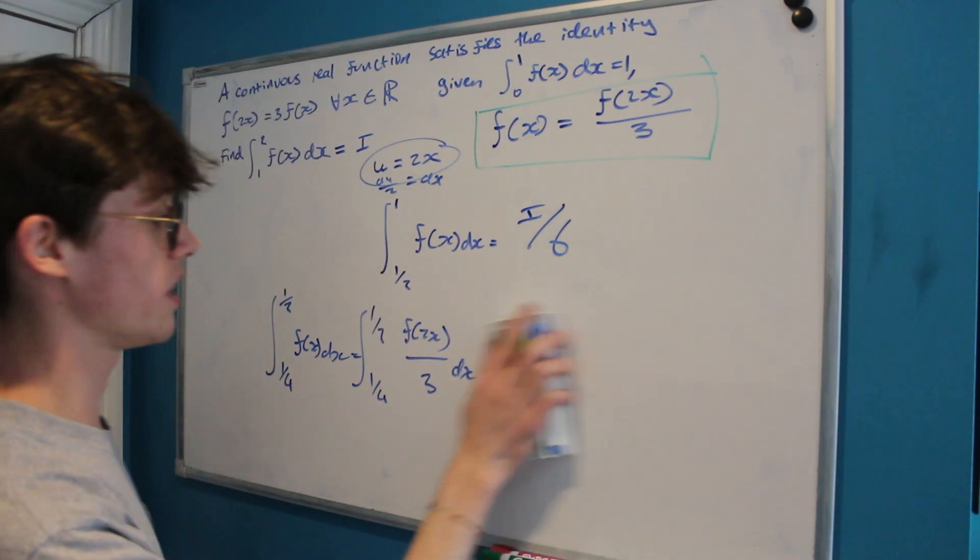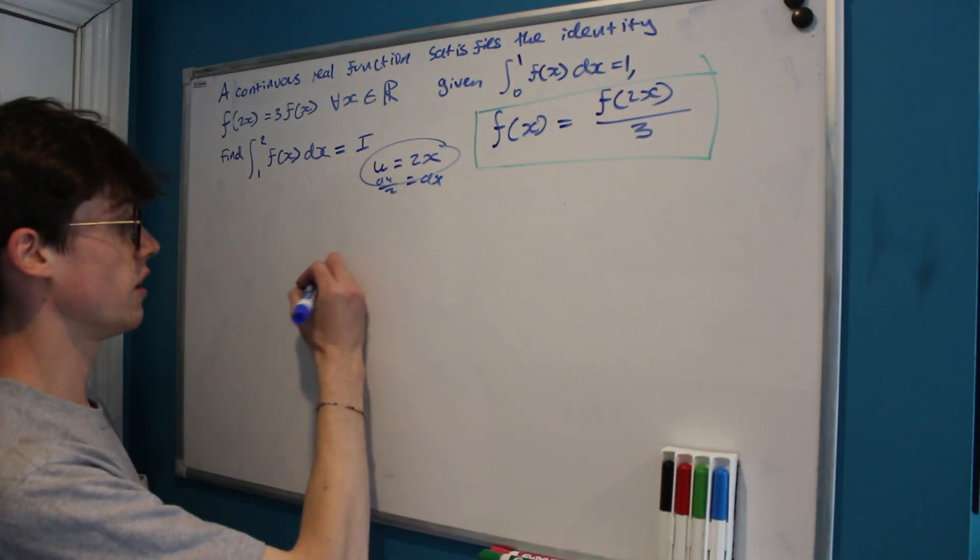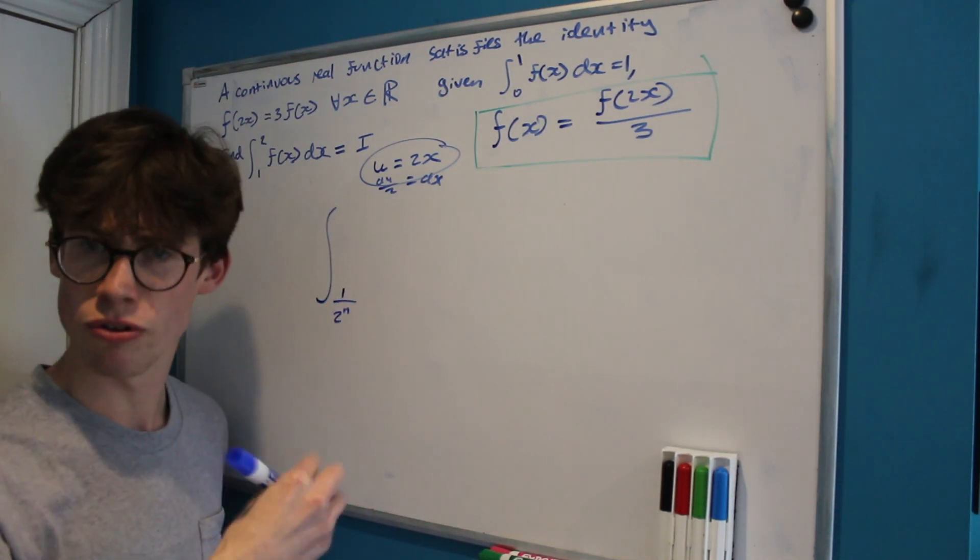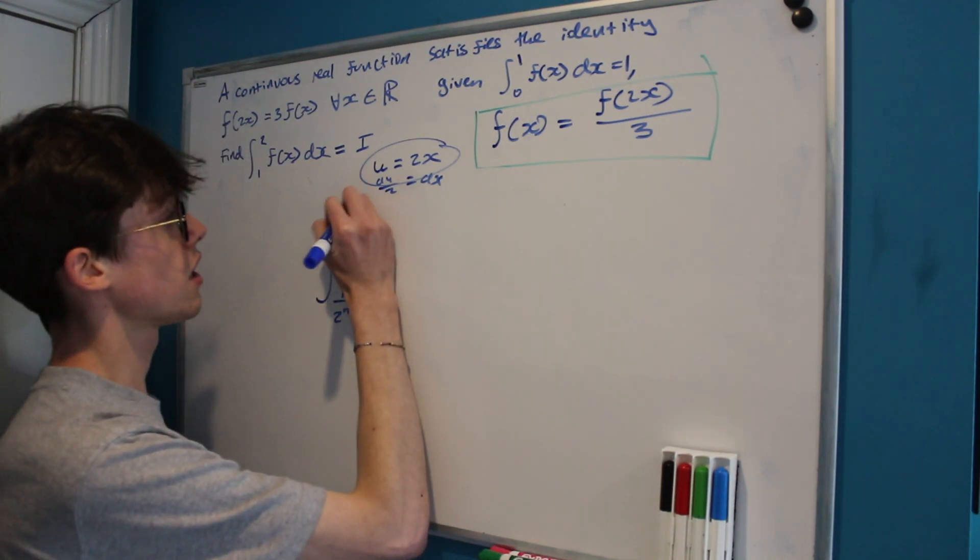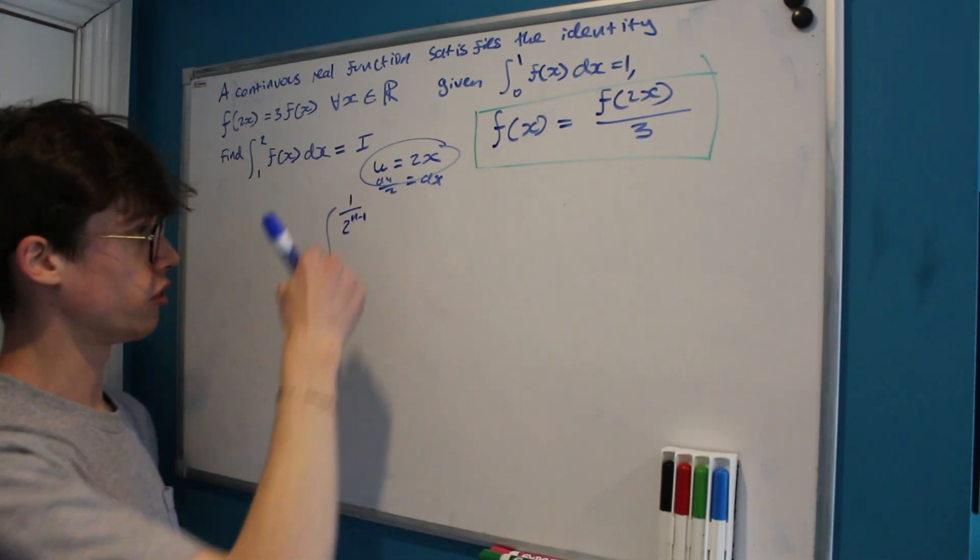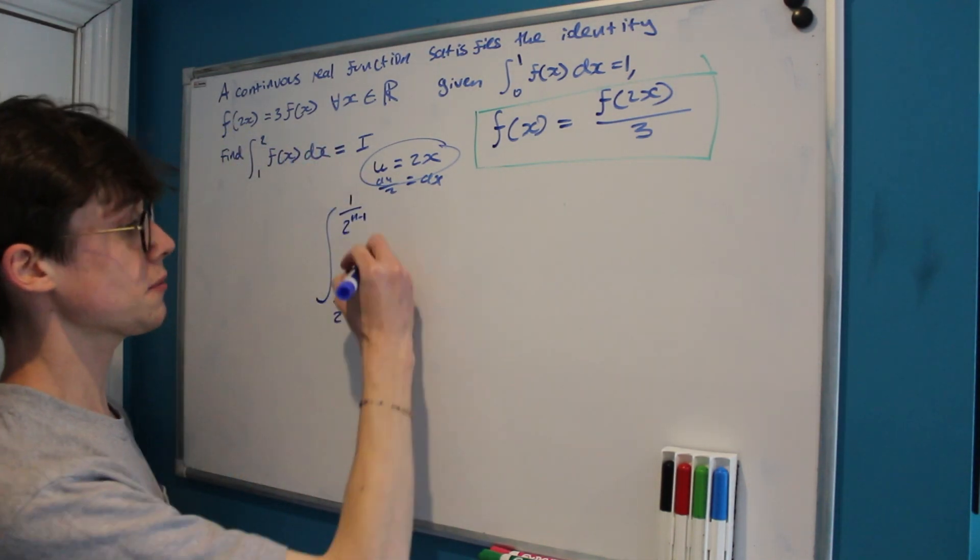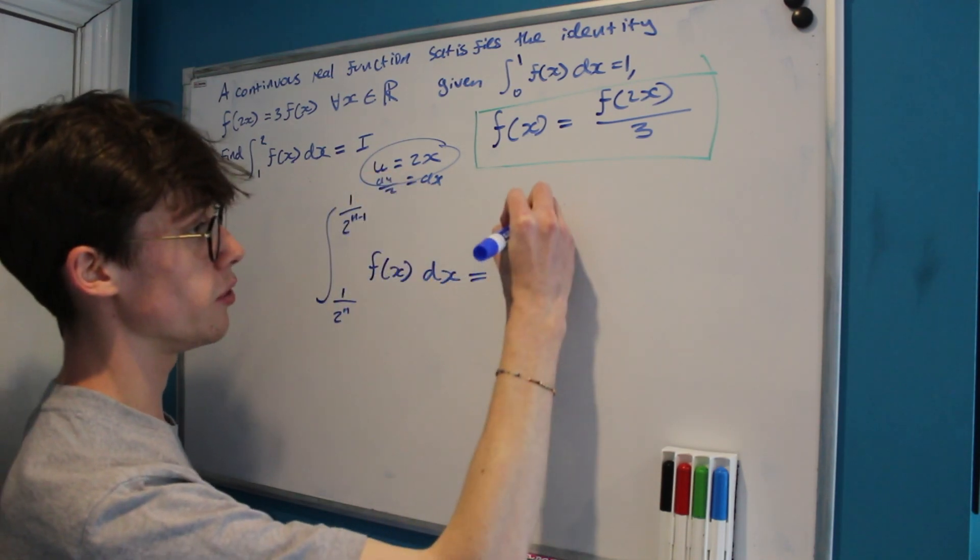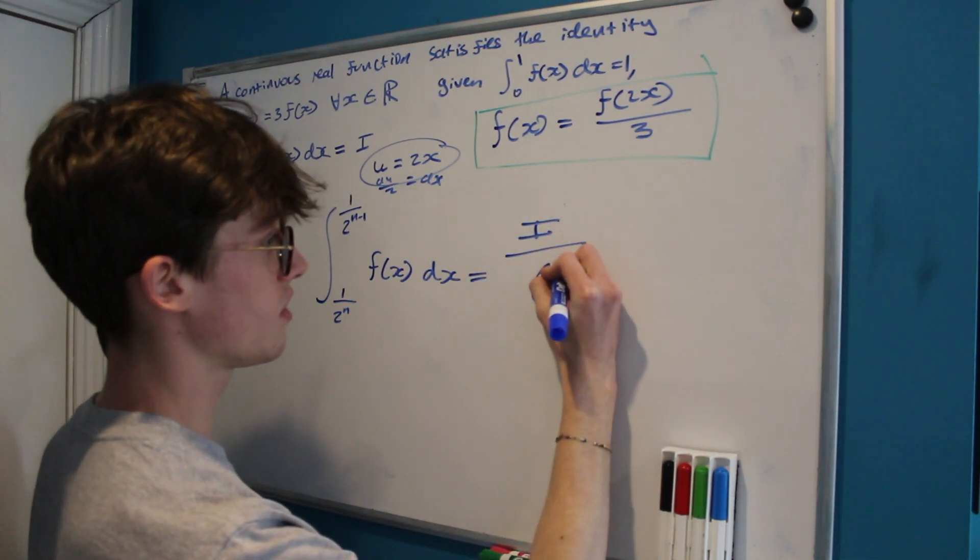So how could we write this in terms of n? That's always what we're seeking to do with these problems. Well, that tells us that the integral from 1 over 2 to the n, because we don't know how many times we've halved yet, we're just going to assume that we've halved n times, to the integral of 1 over 2 to the n minus 1, because of course we want our factor here to be a factor of 2 greater than here, of f dx is equal to our integral i divided by 6 to the power of n.